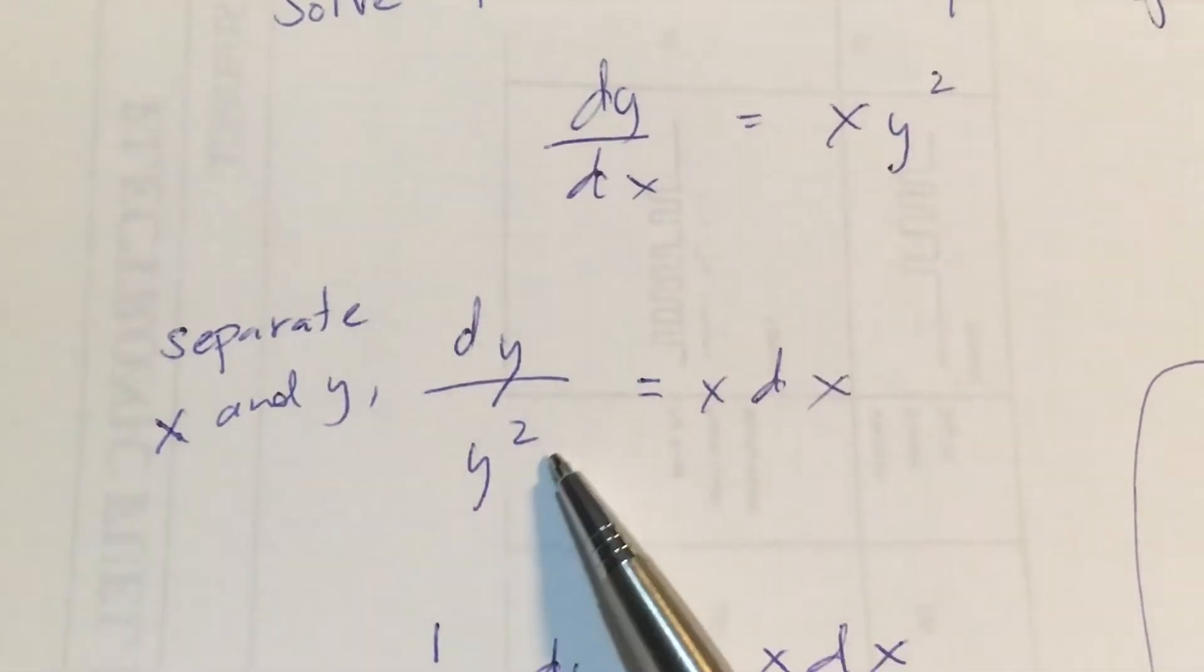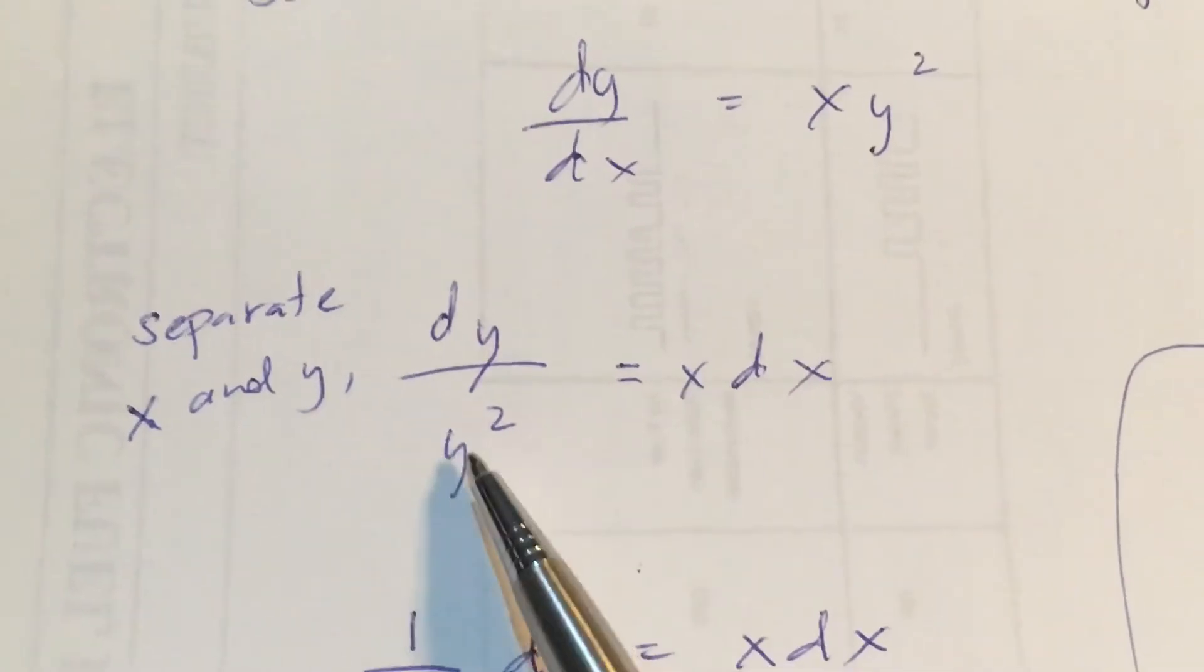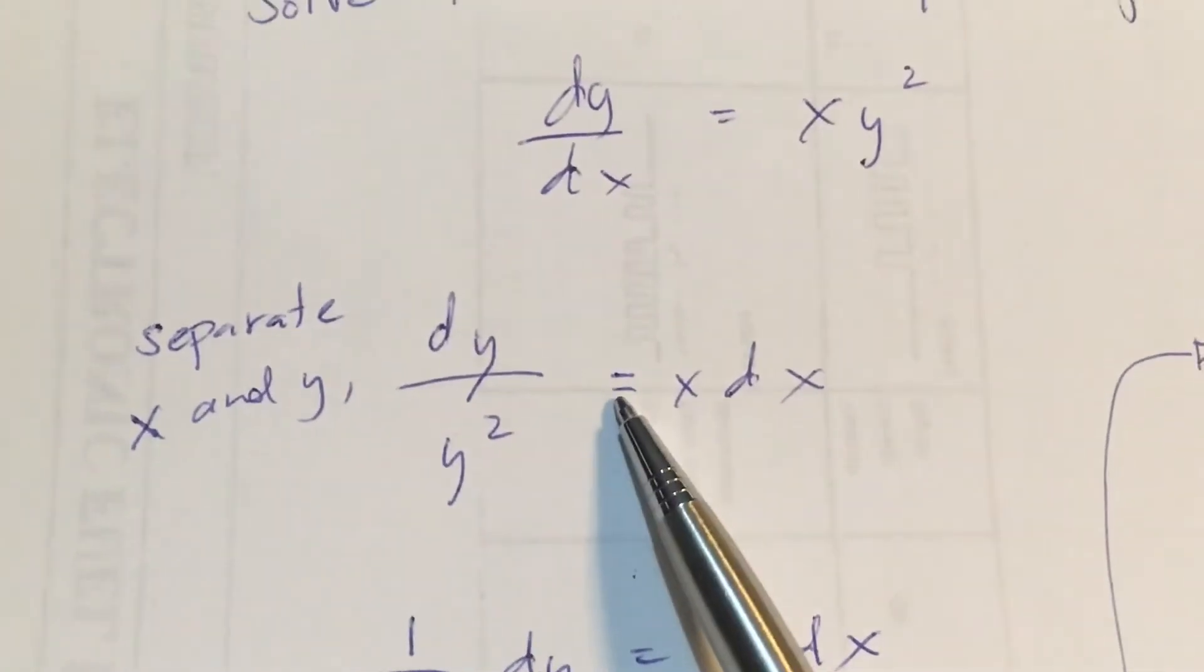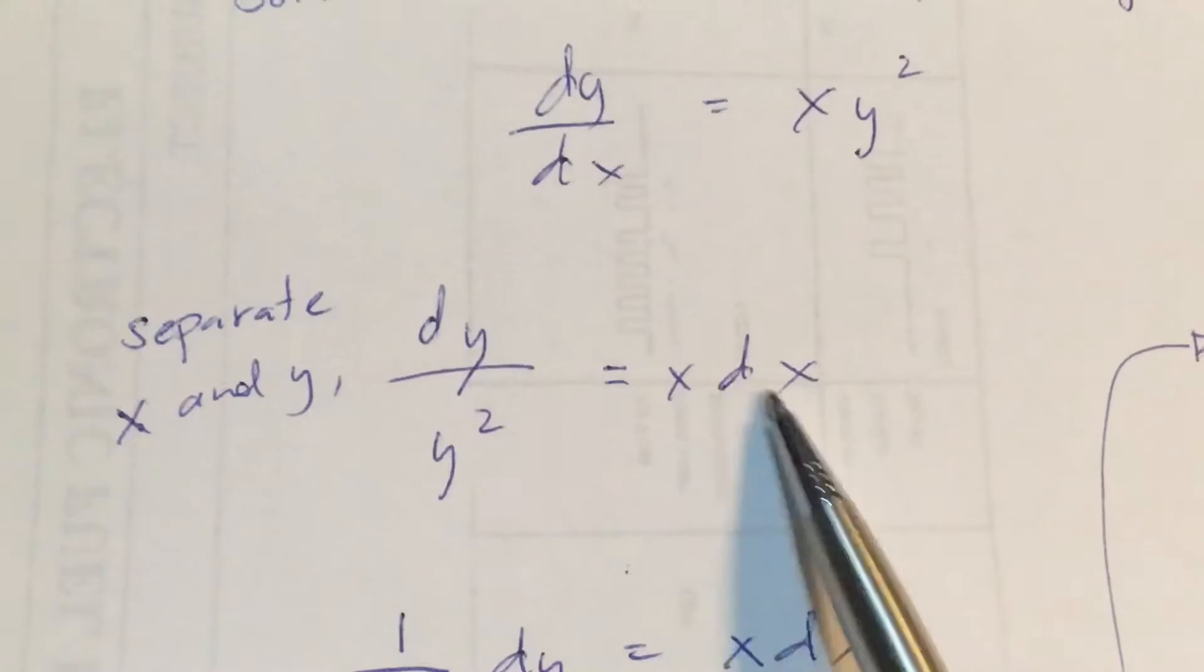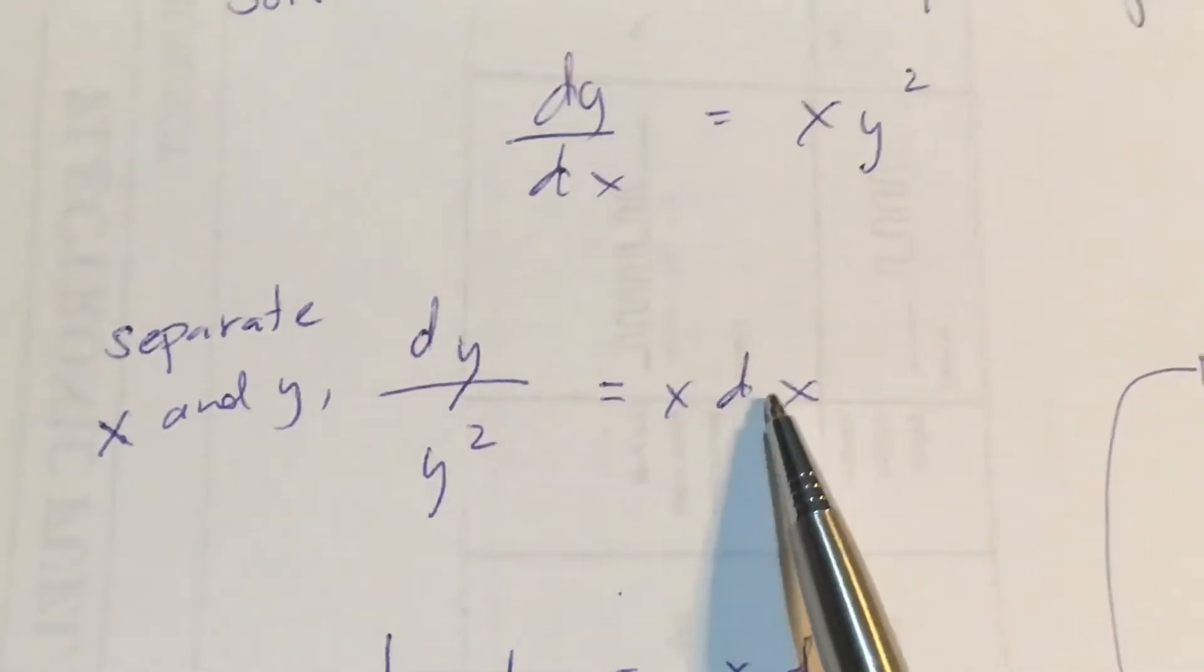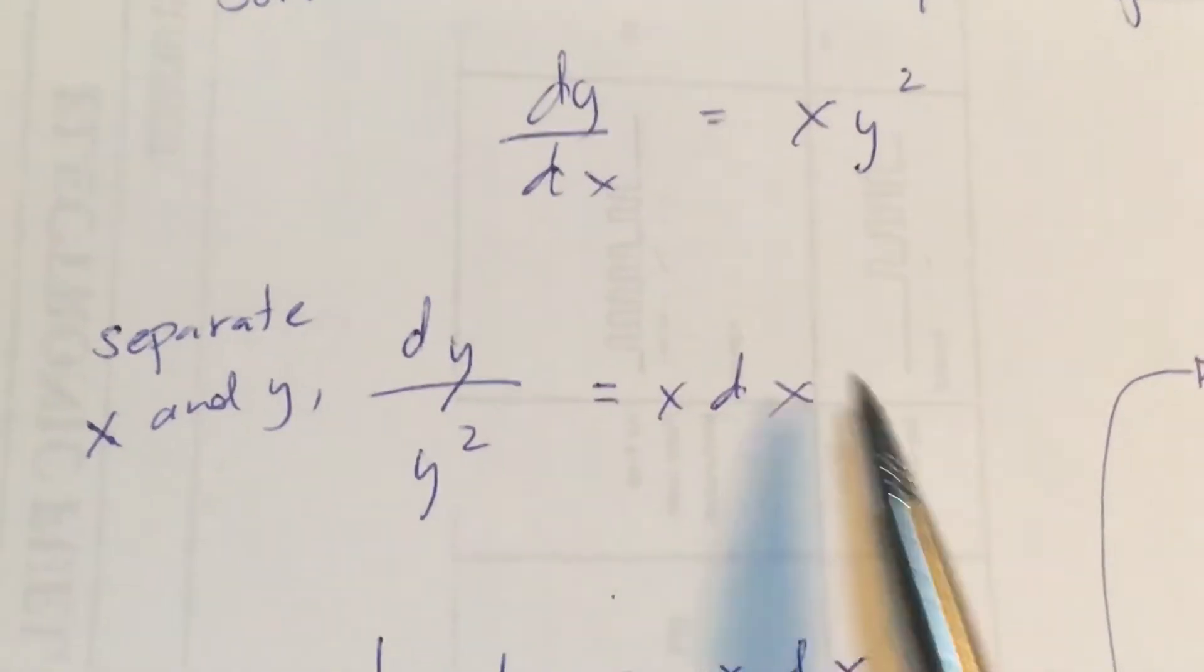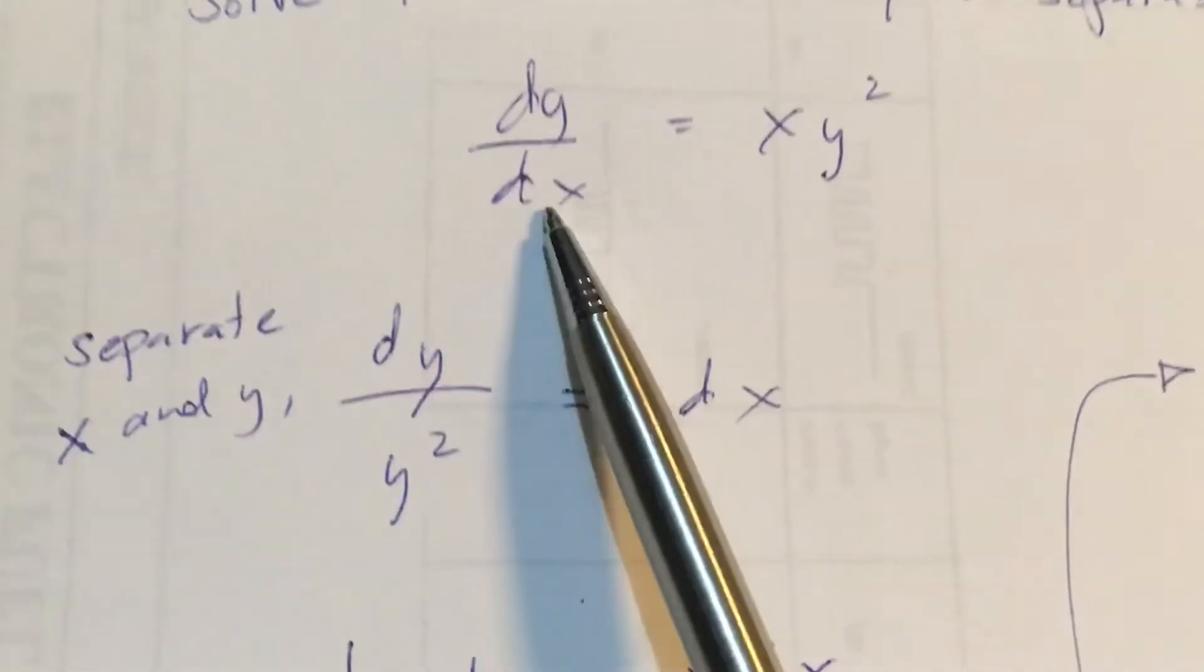As you can see, y raised to the second power is written here at the denominator. And the xs are already at the right side of the equation. x dx.